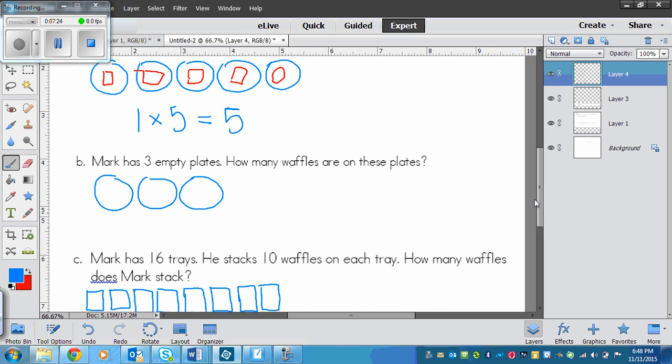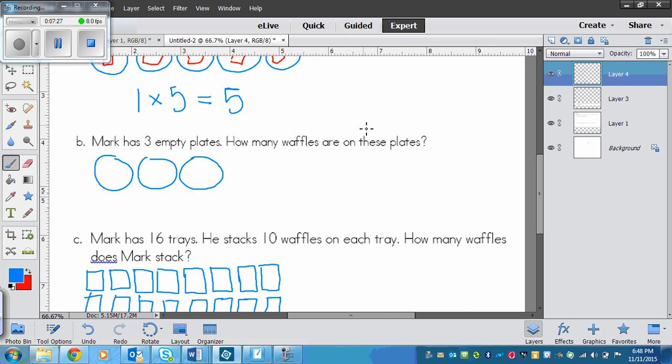Okay. Down below, Mark has three empty plates. How many waffles are on these plates? So we don't put any waffles on here because they are empty. We need to know how many waffles are on there. Well, there are no waffles. So we can write our fact, which would be 3 times no waffles. So 3 plates times no waffles, that equals no waffles, zero.